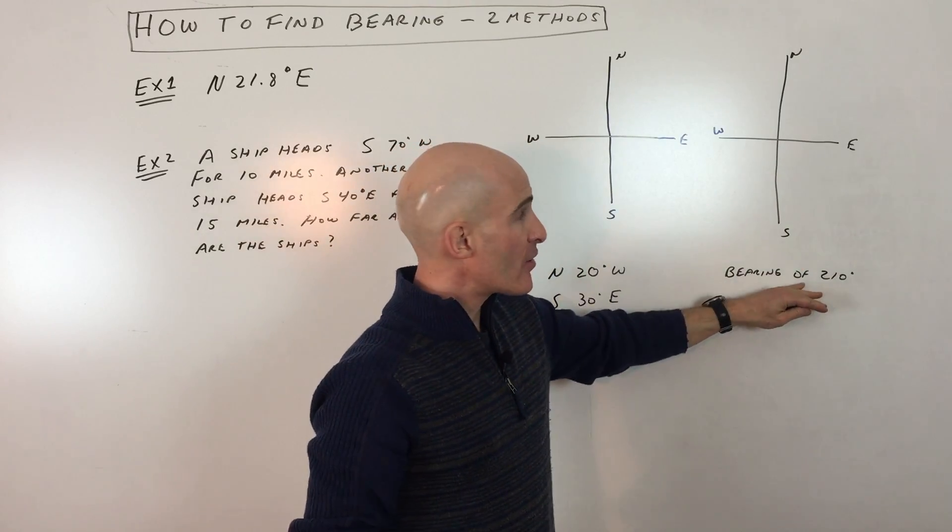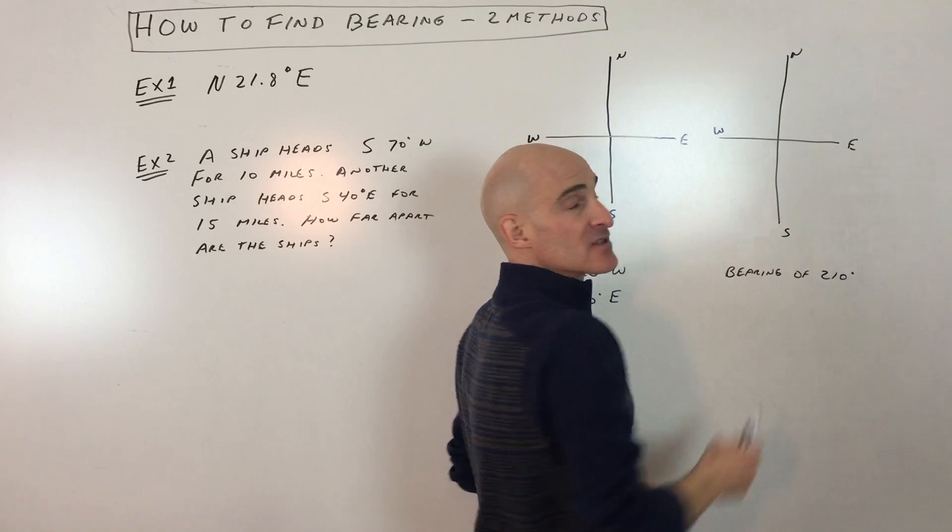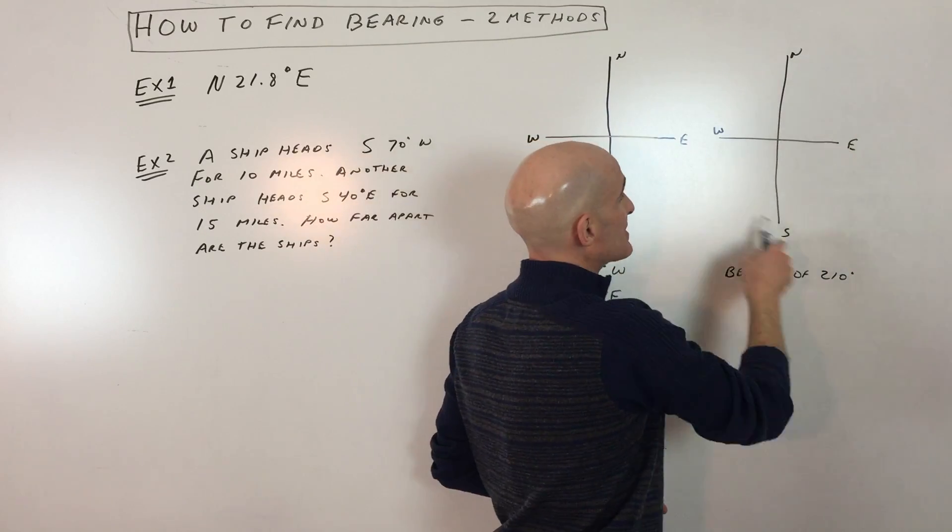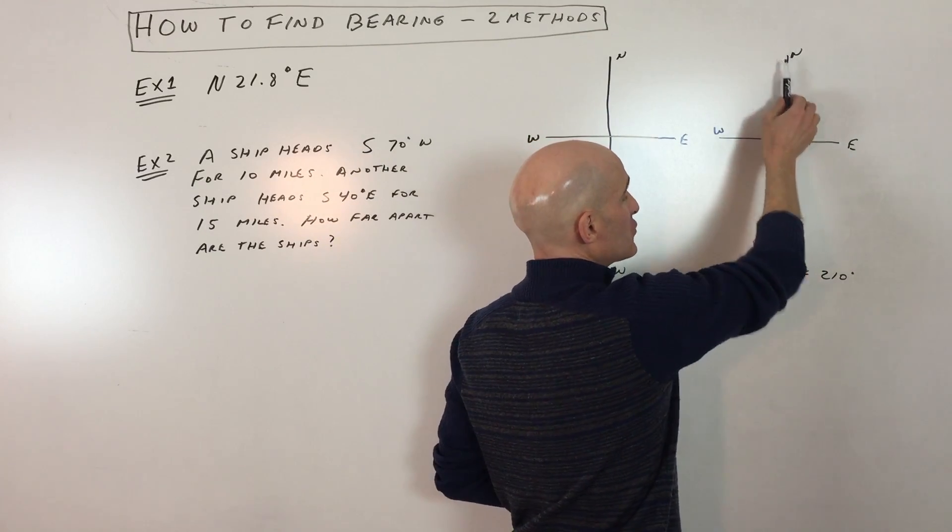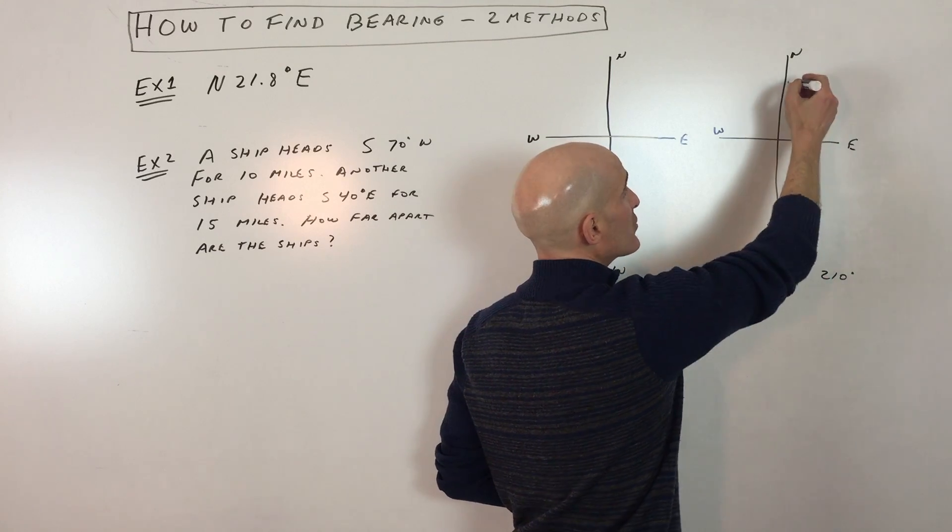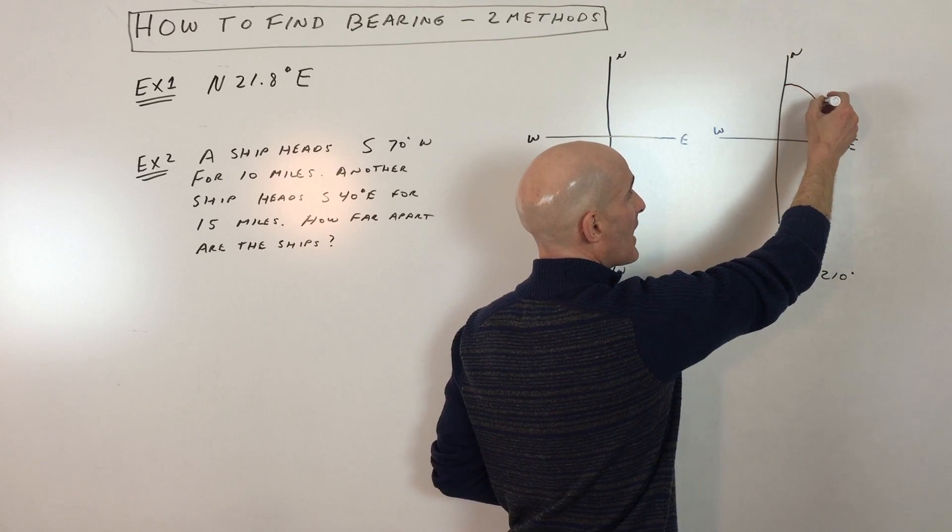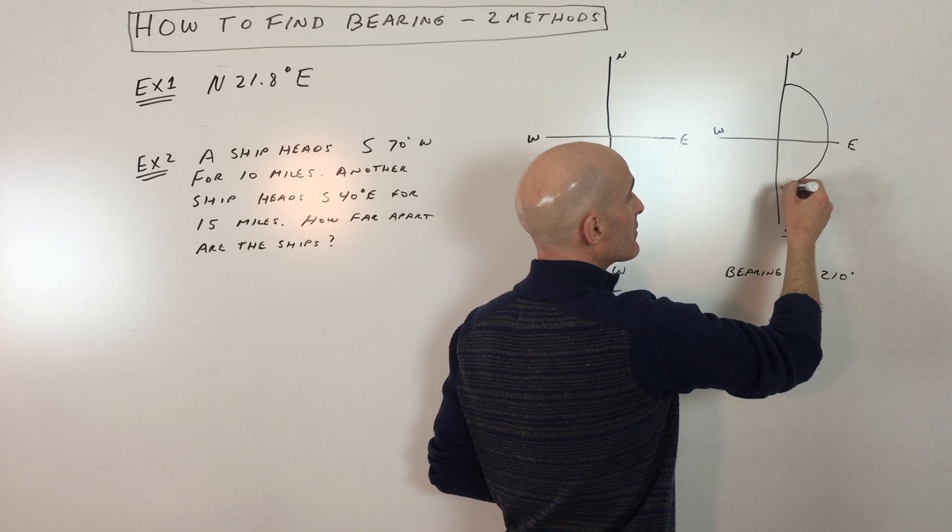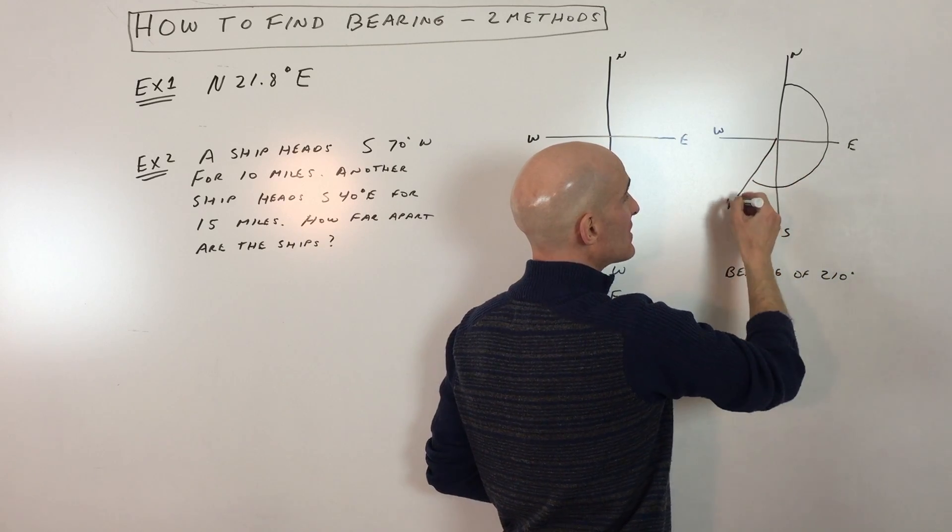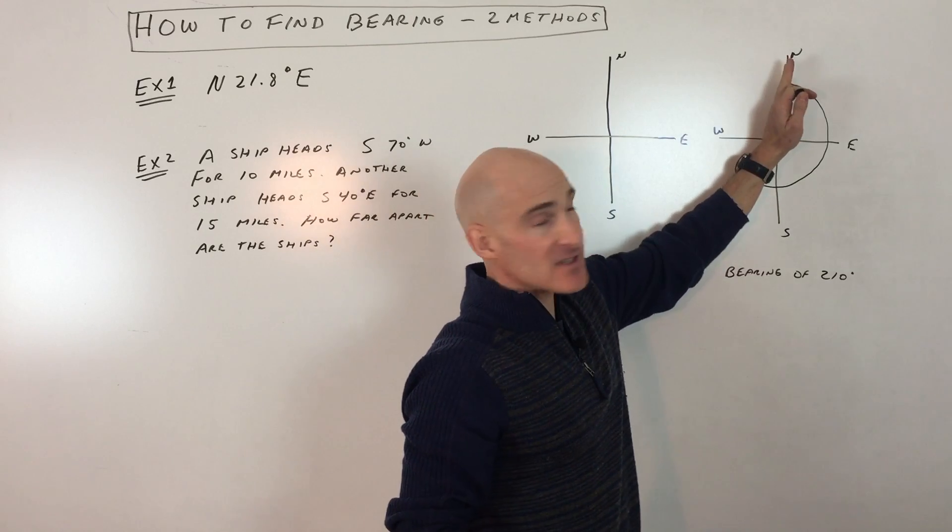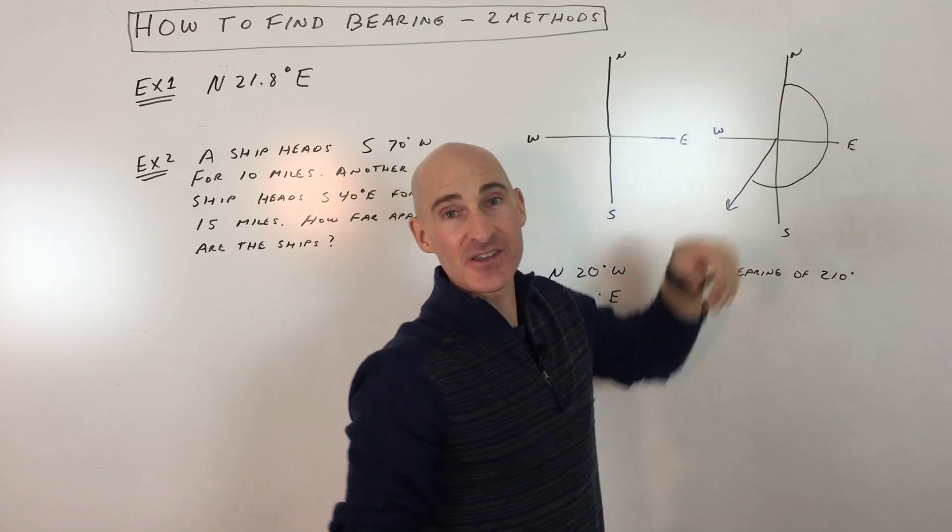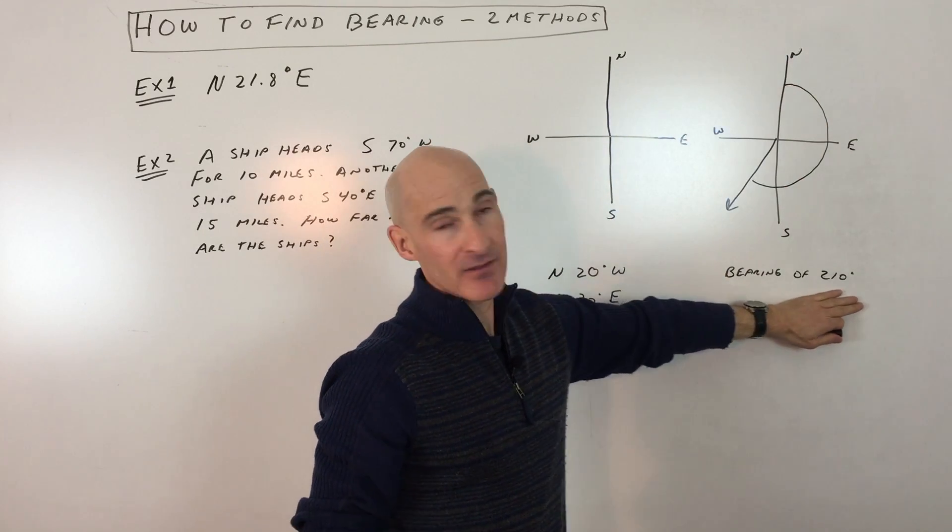But when you find bearing, what you do is you orientate yourself in these cardinal directions, the northeast southwest. You start facing north and if it says a bearing of 210, you would measure clockwise from the north, 210 degrees, and there you would be right there. So you start facing north and you go clockwise. Okay, so that's one way. That's when they just say bearing.